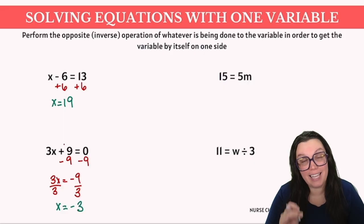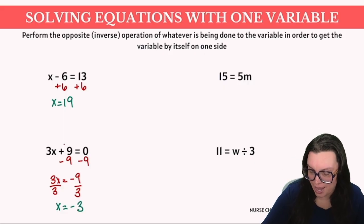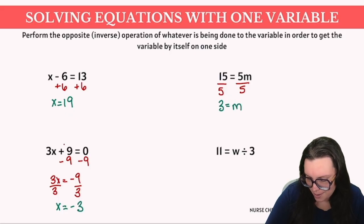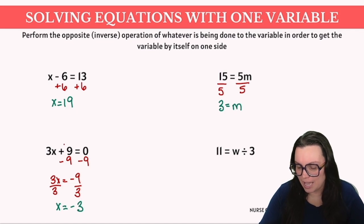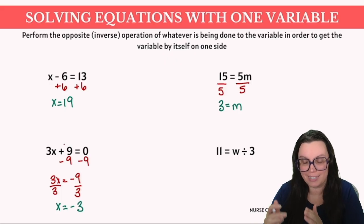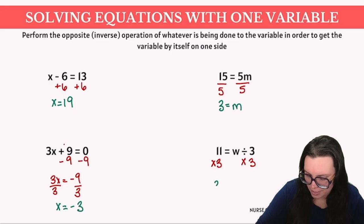Our next example: 15 equals 5m. We want to isolate that variable m, so we divide both sides by 5, giving us 3 equals m. Our last example: 11 equals w divided by 3. We want to isolate w on one side by itself. To do that, we multiply each side by 3 because that is the inverse operation, and that gives us 33 equals w.